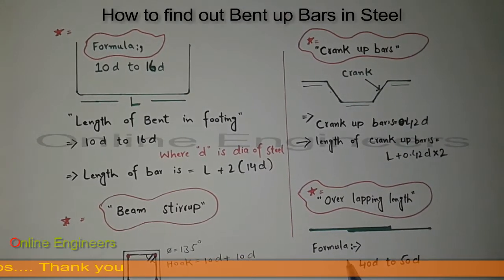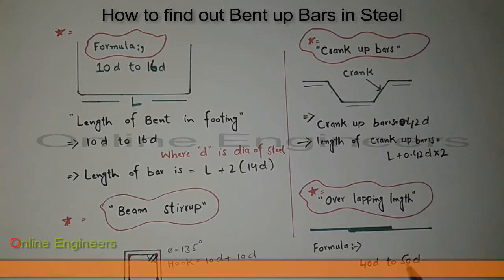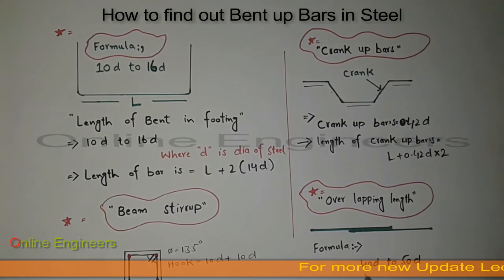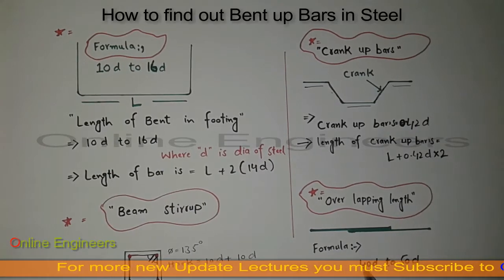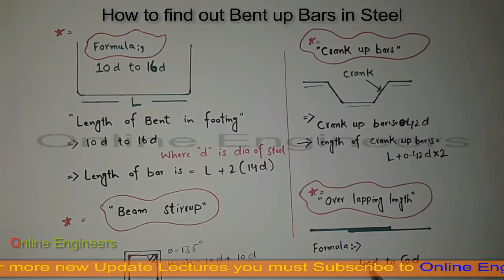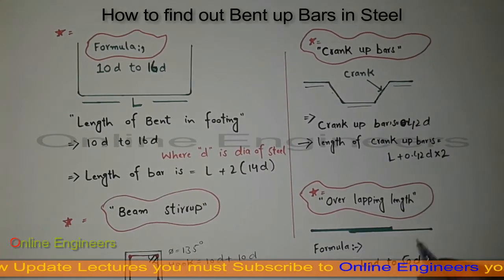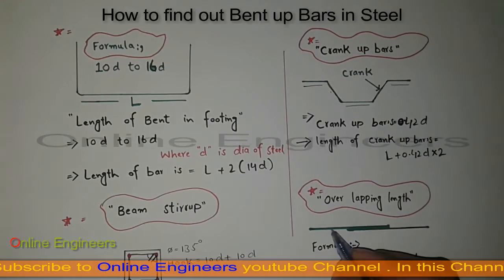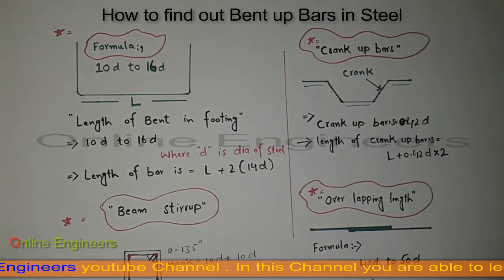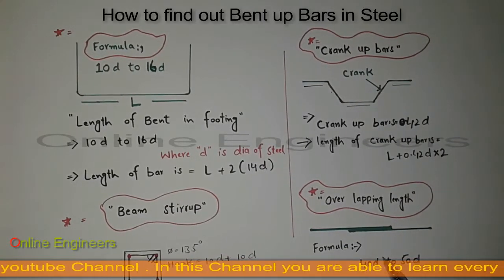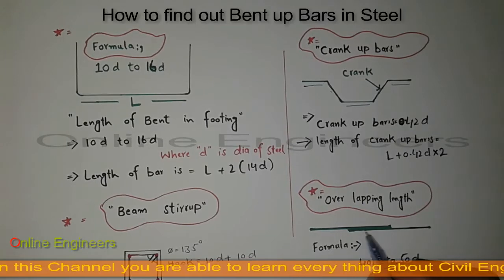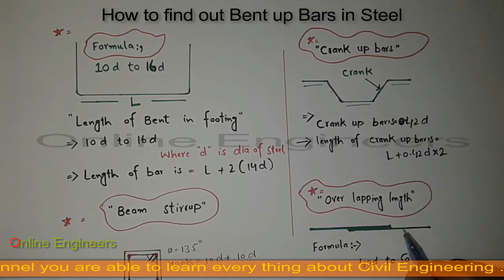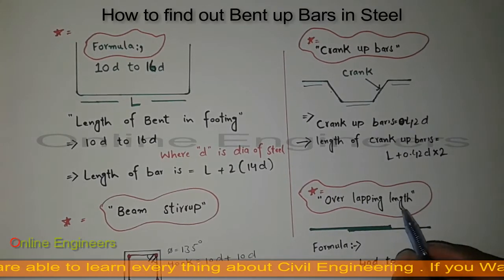The fourth one we have is overlapping length. The formula for this is 40d to 50d — you can take a value between these two. 40 is the constant and d is the diameter of the steel. By this formula you can easily find out the overlapping length.